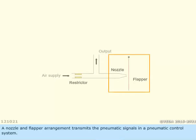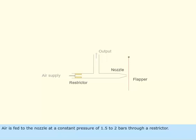A nozzle and flapper arrangement transmits the pneumatic signals in a pneumatic control system. Air is fed to the nozzle at a constant pressure of 1.5 to 2 bars through a restrictor. The function of a restrictor is to limit the air flow.